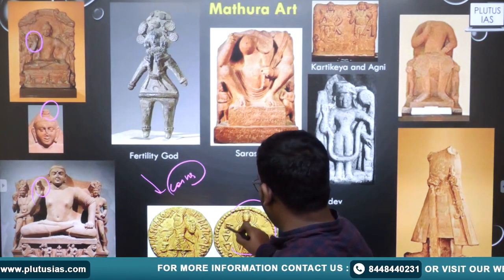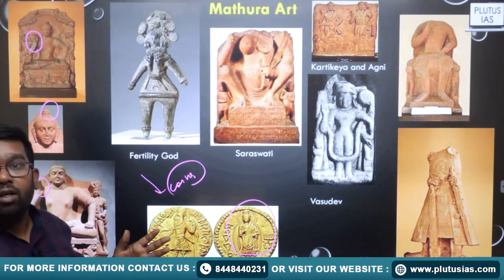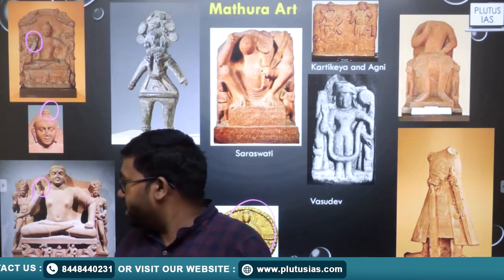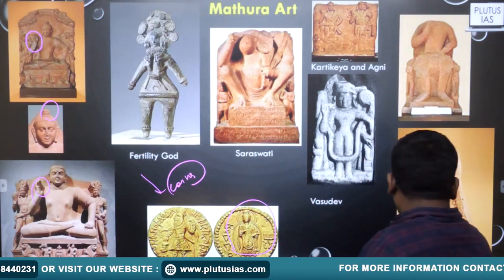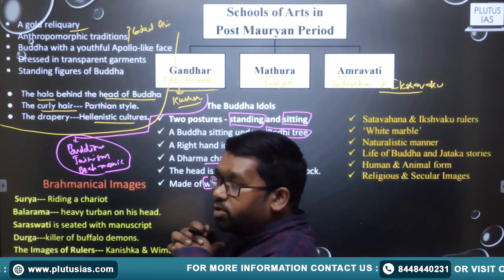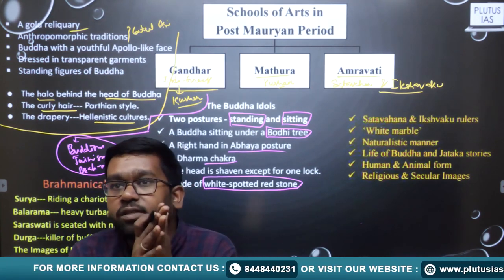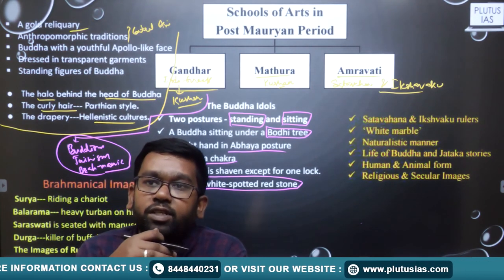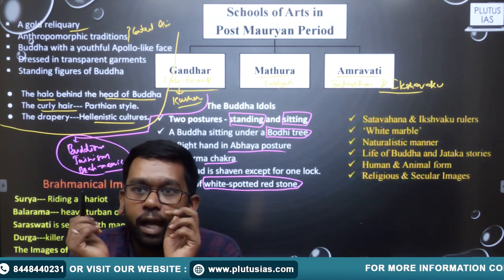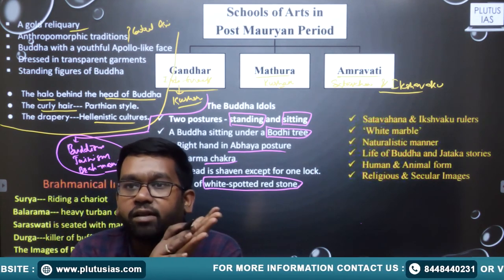We find a Buddha statue represented on another gold coin of Kanishka. In the Mathura school, the Brahmanical traditions are also present. The Mathura school does not only talk about Buddhism — as the Gandhara school mainly did. Mathura school also includes Jainism — images of Parshvanath and Adinath have been made.